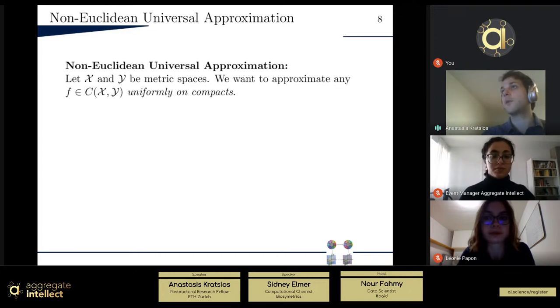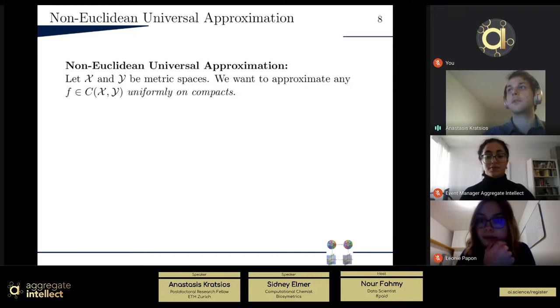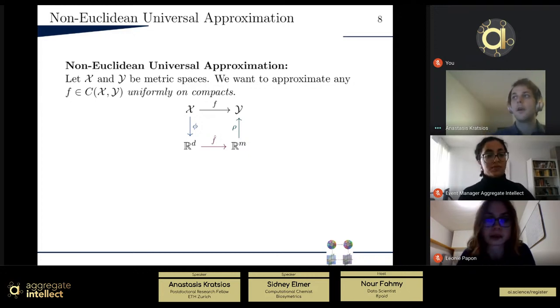What we want to do is we want to relate these two background ideas that I passed, so manifolds and approximation of our neural networks. But specifically, we want to approximate any continuous function from X to Y in the same sense, so uniform and compacts. But how do we do that? I mean, because we don't necessarily have a notion of a tool to approximate in this space with.